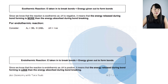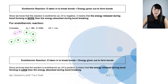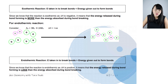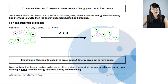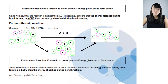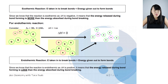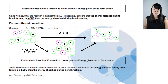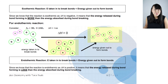Let's look at this pictorial representation. We have A₂ and 3B₂, and 2AB₃ are formed — and delta H is positive. In a chemical reaction, bonds are broken and bonds are formed. Between the initial reactants and the intermediate stage, which contains all the individual atoms, energy must be taken in to break the bonds. From the atoms to the final stage, energy must be given out to form the bonds.